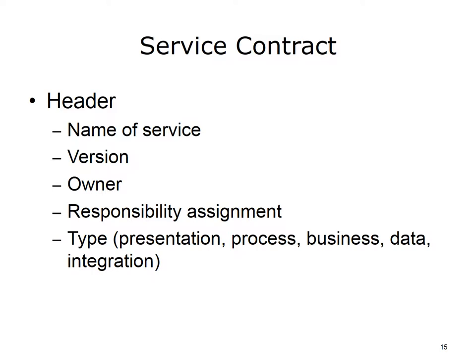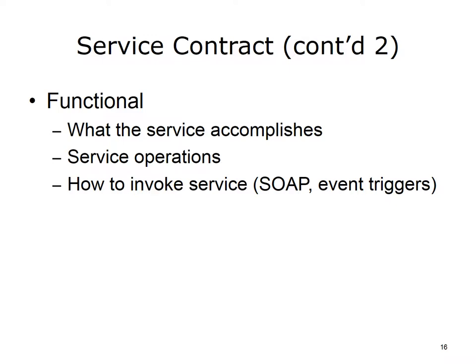The service contract includes the name of service, version, owner, responsibility assignment, and type — that is, presentation, process, business, data, and integration. It defines the product you are building. It includes what the service accomplishes, service operations, and how to invoke the service — that is, SOAP, event triggers. An example of an event trigger would be if you give the system a patient's weight and height. The system would give you the body mass index, or BMI.